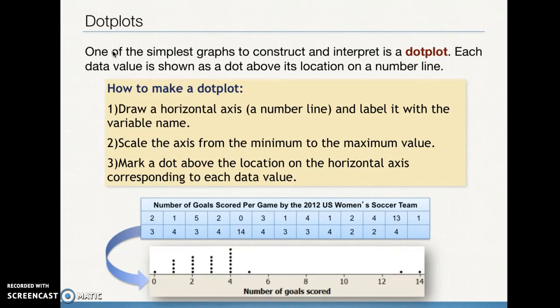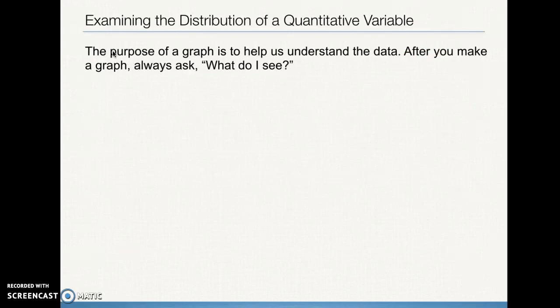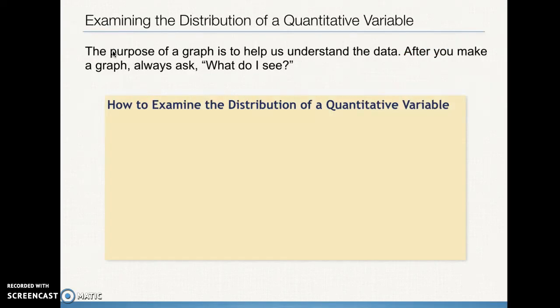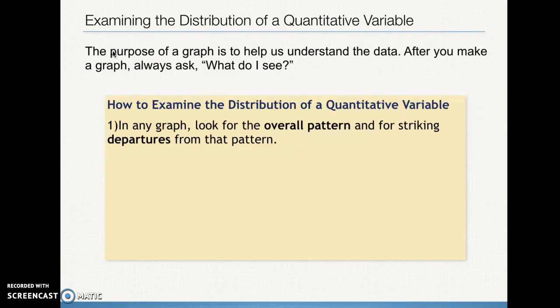When we look above the three, we have one, two, three, four, five dots. So when we look at the data, we see five different times that we see the number three. And way over on that right-hand side, you can see that we have one game where 13 goals were scored and one game where 14 goals were scored. And those are the ones represented at the 13 and 14 over on the right-hand side.